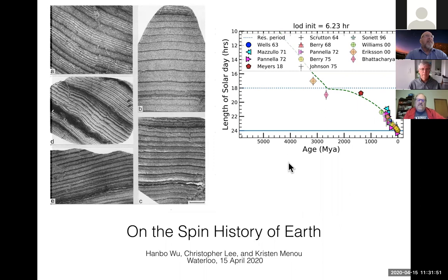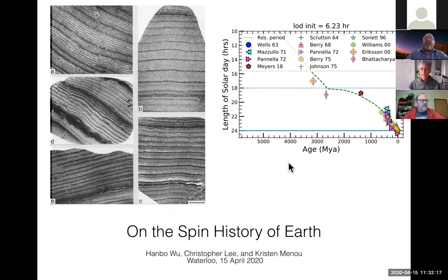Norm is a very versatile theorist who works in a wide range of areas. Many of you who work in extragalactic physics and AGN know him for his work on momentum-driven winds and feedback from AGN and galaxies as a whole. He also has interests in other areas, including planetary systems, and I'm wondering whether that was the motivation for understanding the spin history of the Earth, which is what he's going to talk about today.